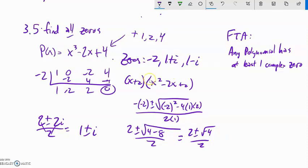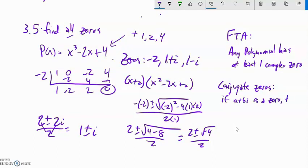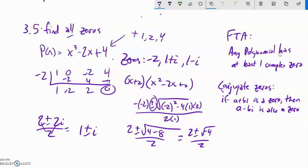Notice when I got the complex number 1 + i, its conjugate 1 - i came with it, because of the ± in the quadratic formula. This tells us something about conjugate zeros: if a + bi is a zero, then a - bi must also be a zero. So if I know that 1 + i is a zero, then 1 - i has to also be a zero.